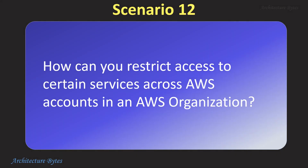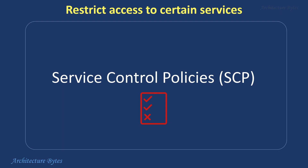How can you restrict access to certain services across AWS accounts in an AWS organization? You can restrict available AWS services to various accounts in your AWS organization using service control policies. This restriction can be applied at the organization root level, organizational unit level or account level. You may do this to prevent account users from launching certain services without prior approval.